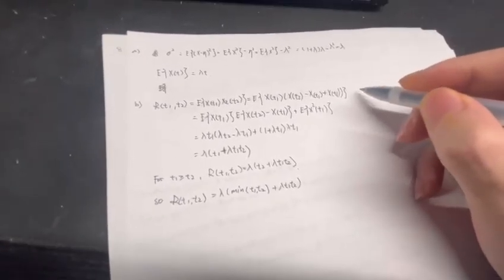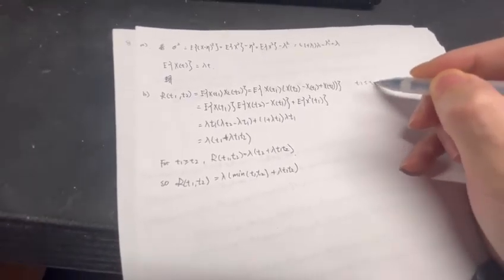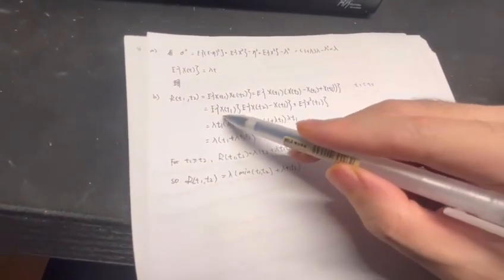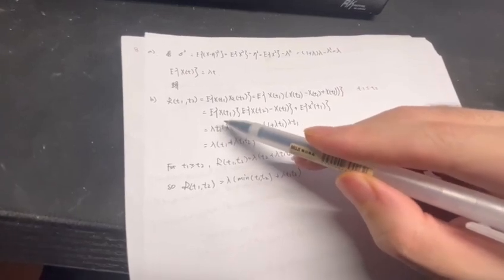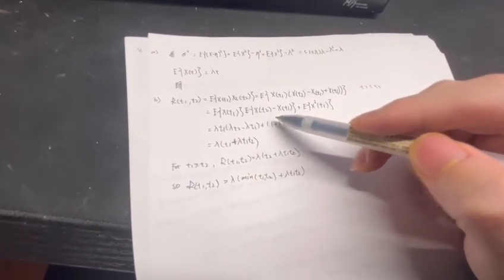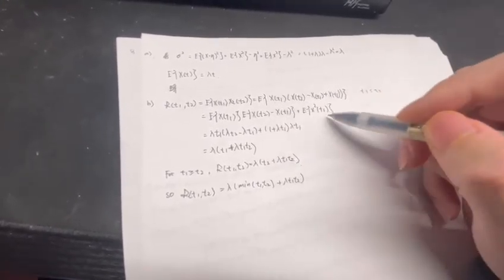This is under the condition that t1 is less than or equal to t2. This equals E[X(t1)] times E[X(t2) - X(t1)] plus E[X(t1)²].